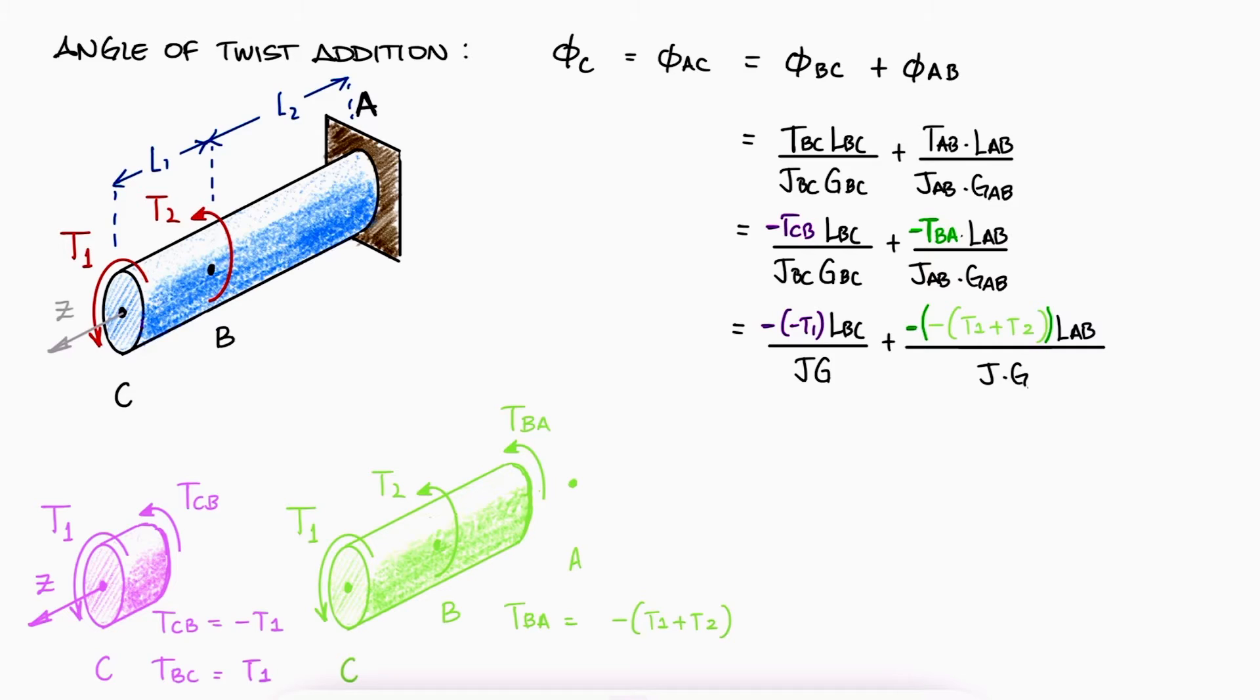The last important concept to point out here is that the lengths refer to the distance between the points of reference. LBC is the length from B to C, and LAB is the length from A to B, and pay close attention, LAB is not the length from the free end to somewhere between A and B.